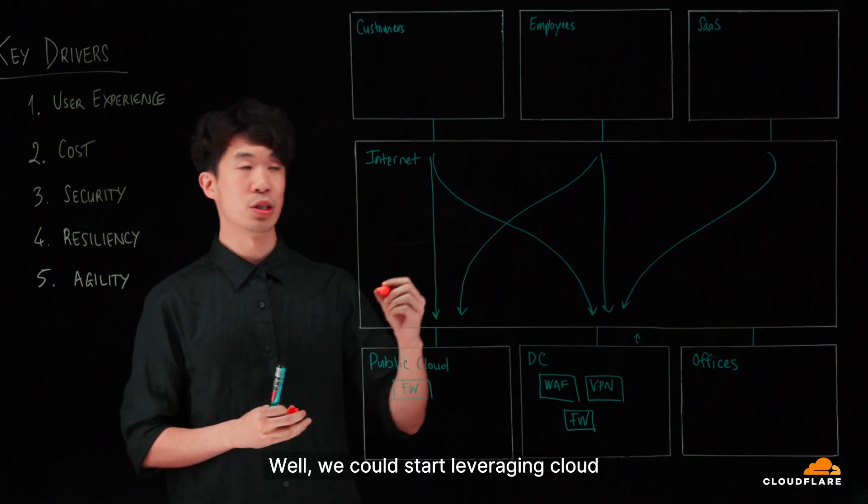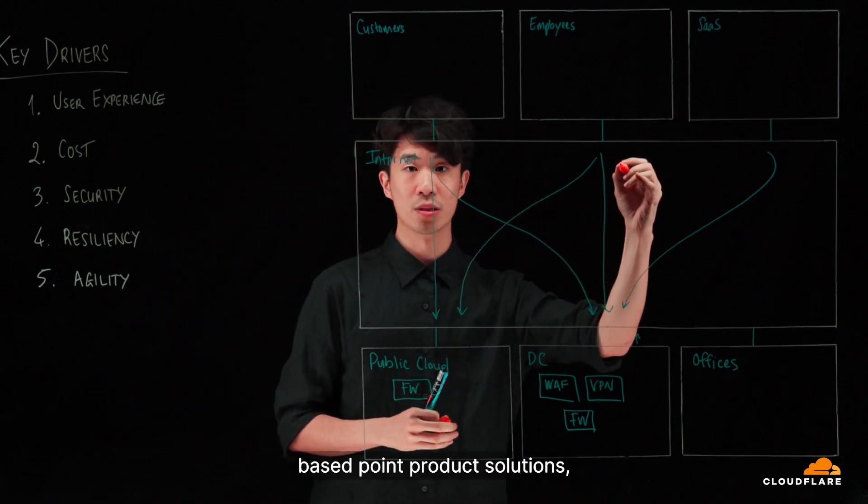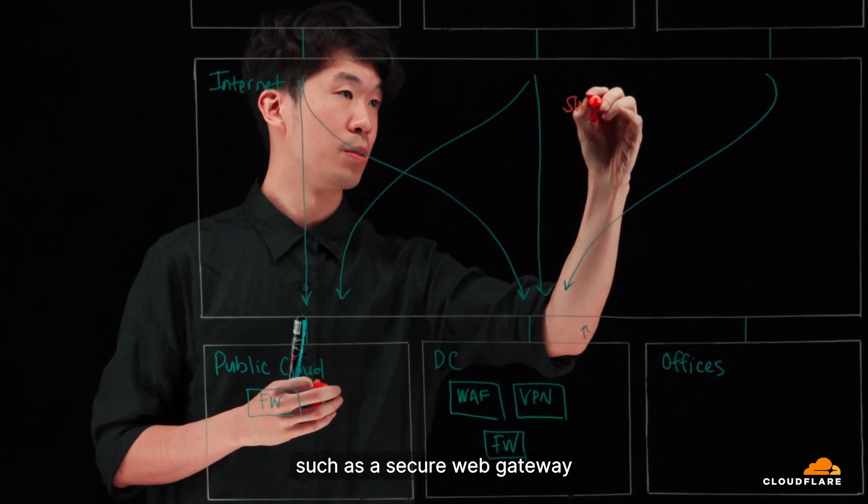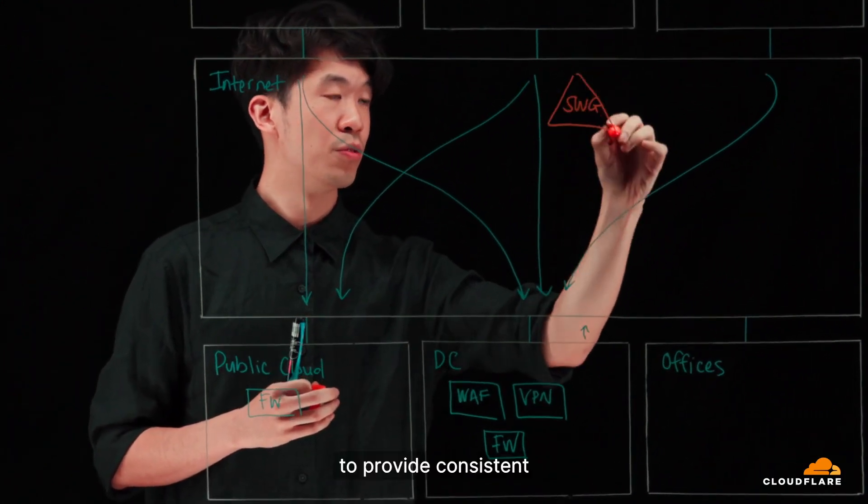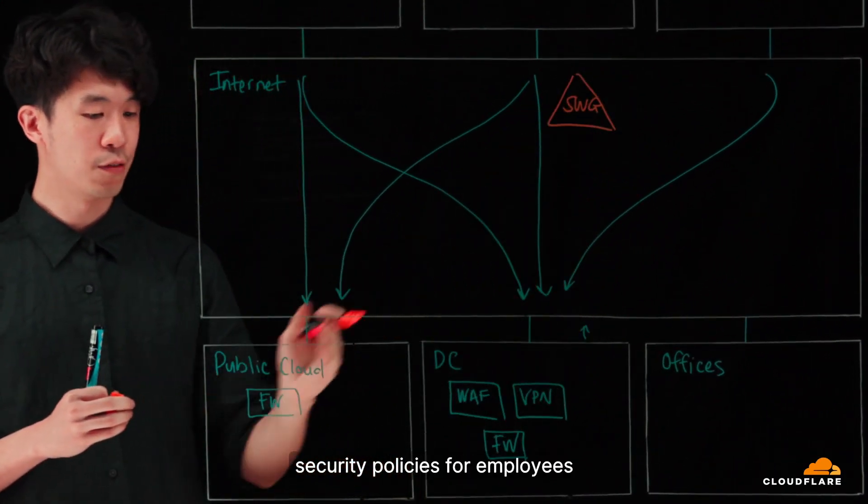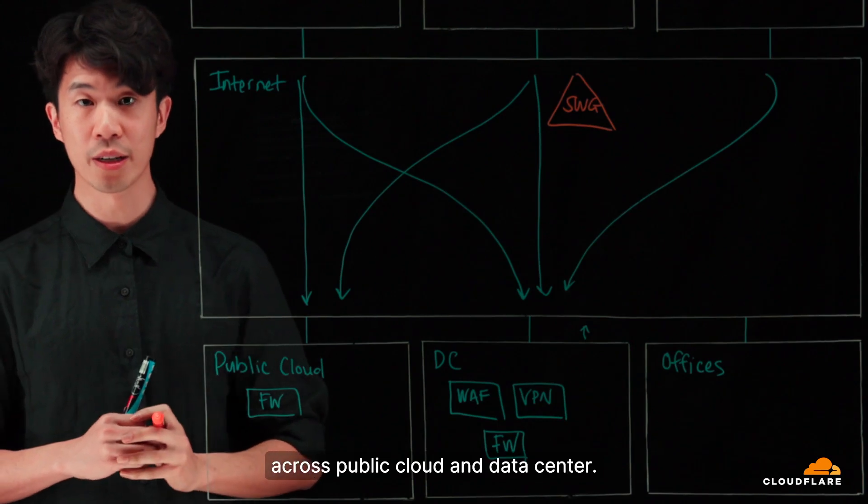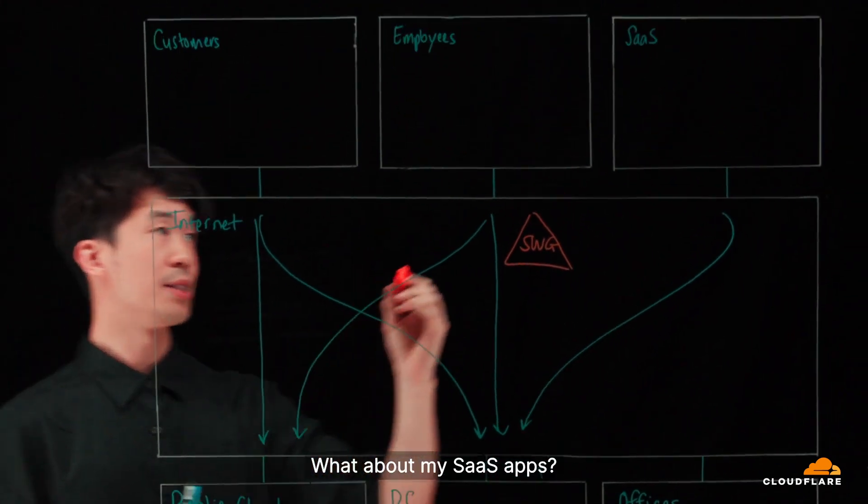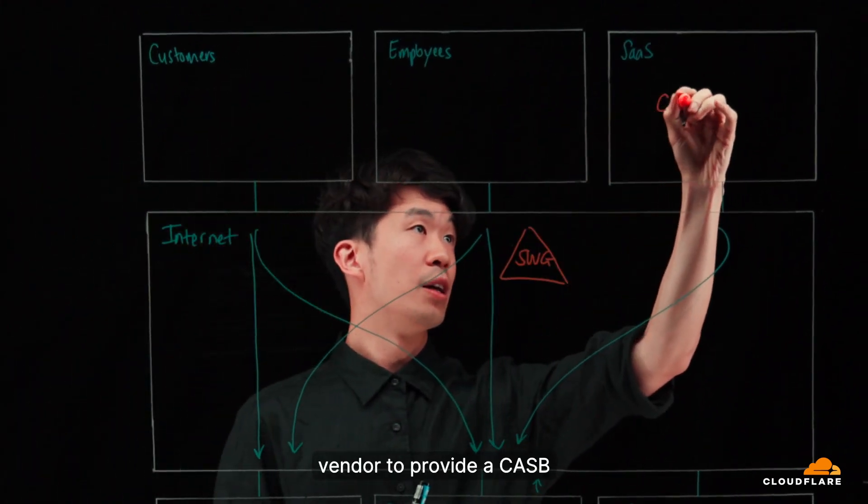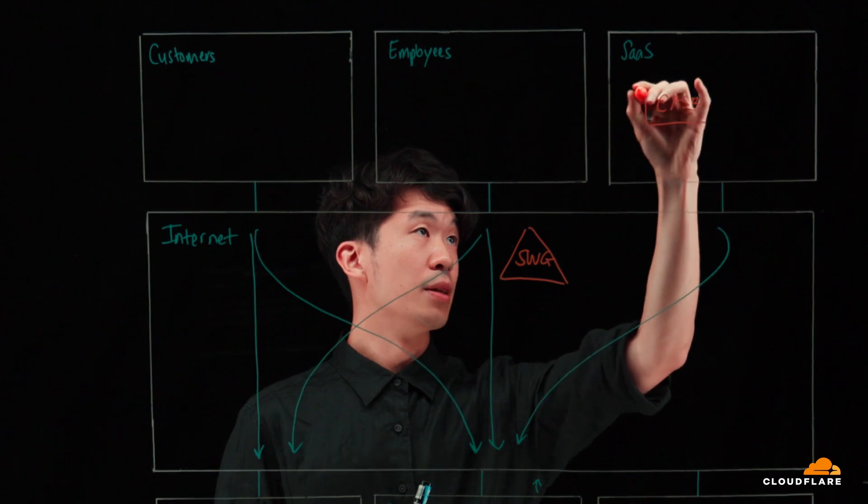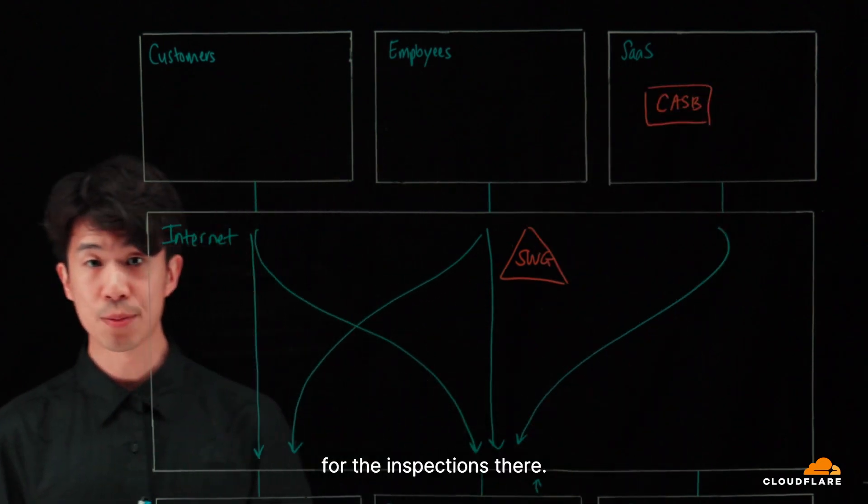Well, we could start leveraging cloud-based point product solutions such as a secure web gateway to provide consistent security policies for employees across public cloud and data center. What about my SaaS apps? We can leverage another vendor to provide a CASB for the inspections there.